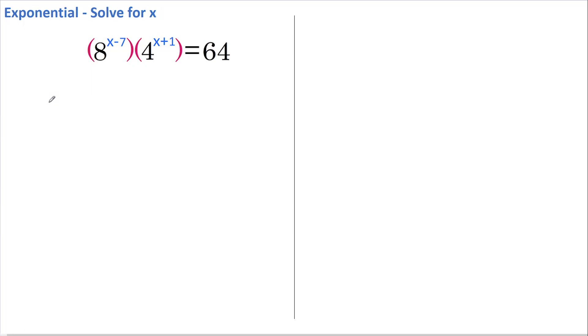That means that we can rewrite this as 2 to the power of 3, raised to the power of x minus 7, multiplied by 2 to the power of 2, multiplied by x plus 1.